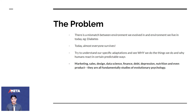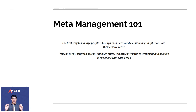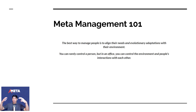Marketing, sales, design, data science, finance, nutrition, the concept of money — they're all fundamentally studies of evolutionary psychology extended to different forms of technology. Meta management is about the best way to manage people: align their needs and evolutionary adaptations with their environment. You can rarely control a person, but in an office you can control the environment and people's interactions with each other. Having interviewed and hired hundreds of people, I can vouch that you have to go back to humans' core needs if you want to build something of value.